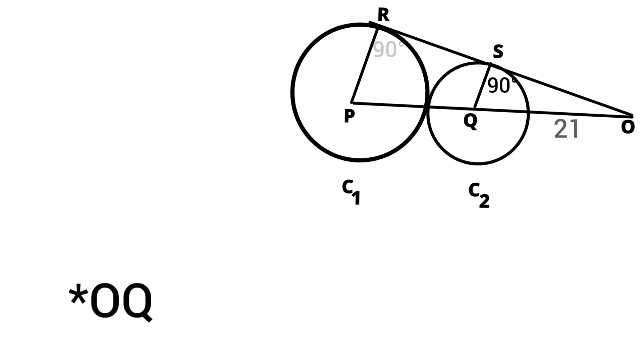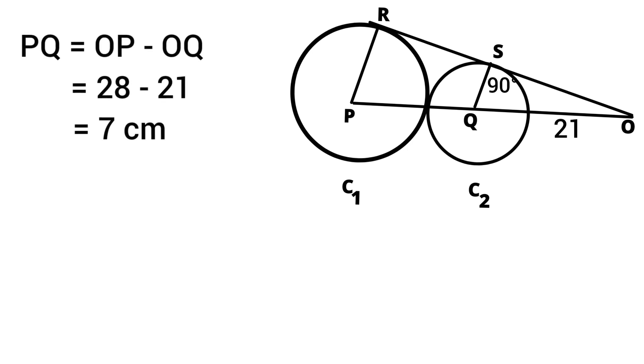Now we have the length of OP, so we can easily find out length of PQ. PQ equals OP minus OQ, which equals 28 minus 21, which equals 7 centimeters.